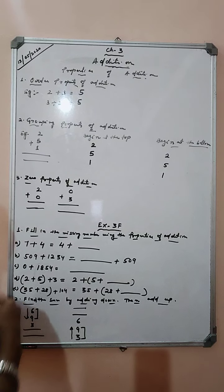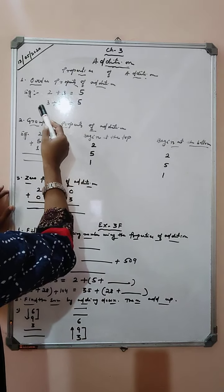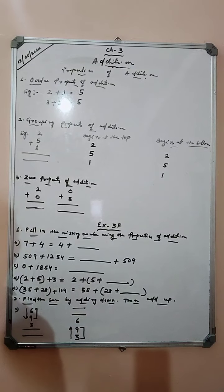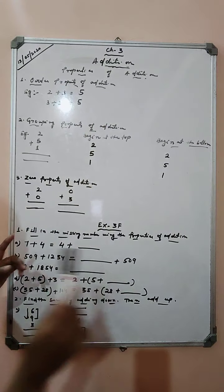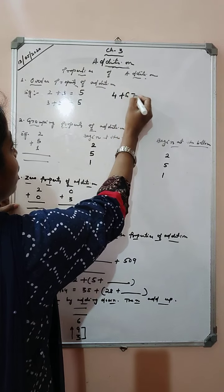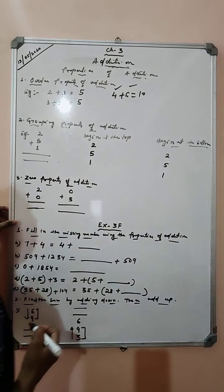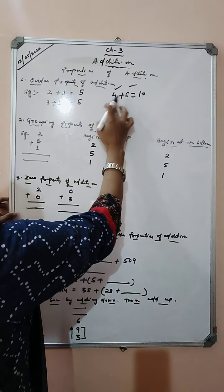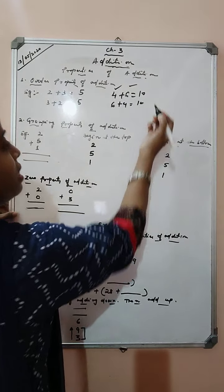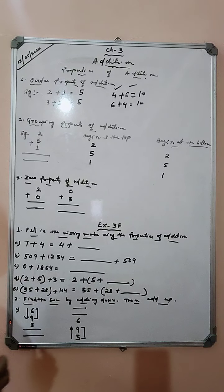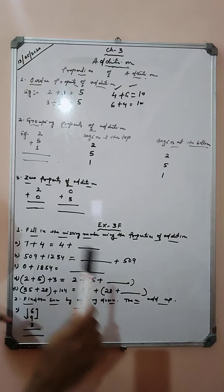So what you can see here? In the first case, 2 was at the beginning and 3 was in the second position. In the second case, 3 was in the beginning and 2 in the second position. That means I have simply changed the order of the numbers but the answer is same in both cases. Suppose 4 plus 6 equals to 10. Now let me change the order of these addends — the numbers that are added are called addends. Let me write 6 first and then 4. Our answer will be 10 only. That means the order property of addition says that if we change the order of the addends, still the answer is the same.